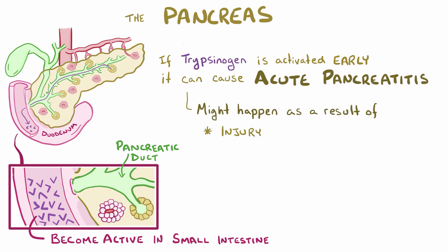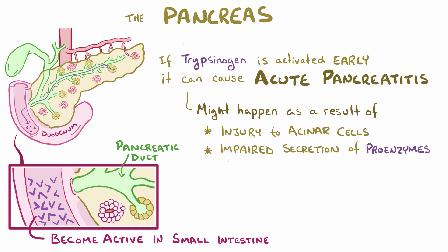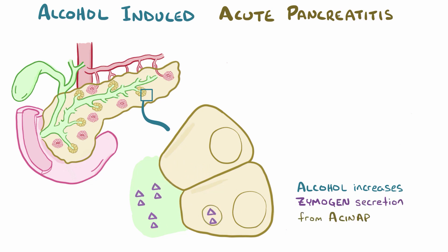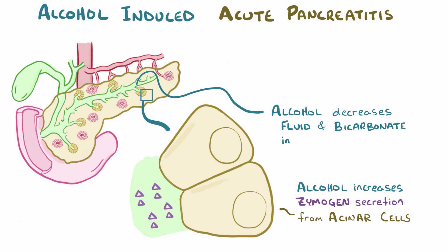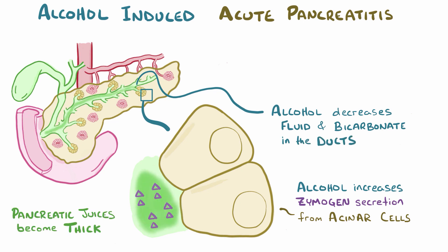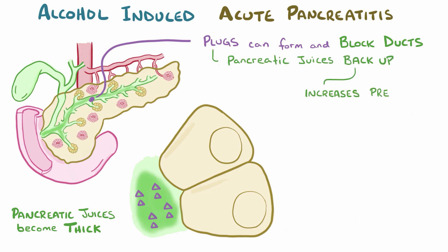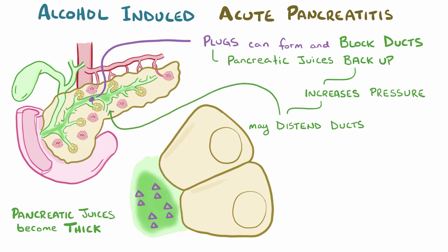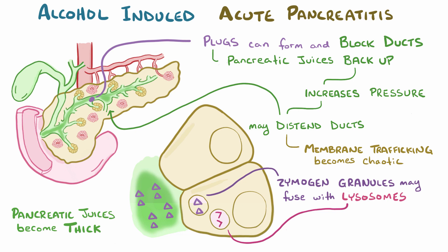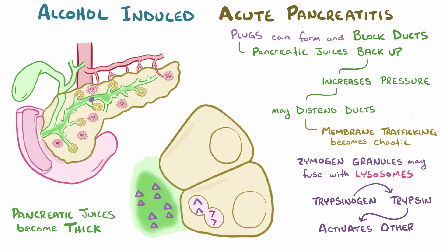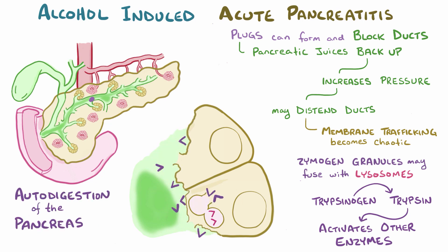This might happen as a result of any injury to the acinar cells, or anything that prevents normal secretion of the proenzymes into the duodenum. The two leading causes of acute pancreatitis are alcohol abuse and gallstones. With alcohol abuse, alcohol increases zymogen secretion from acinar cells while decreasing fluid and bicarbonate production from ductal epithelial cells. As a result, the pancreatic juices become thick and viscous, potentially forming a plug that blocks the duct. A blocked duct causes pancreatic juices to back up, increasing pressure and leading to distention of the duct. At the cellular level, membrane trafficking becomes chaotic—zymogen granules might fuse with lysosomes, bringing trypsinogen into contact with lysosomal digestive enzymes. Trypsinogen is then turned into activated trypsin, which begins the cascade of digestive enzyme activation and autodigestion of the pancreas, causing acute pancreatitis.